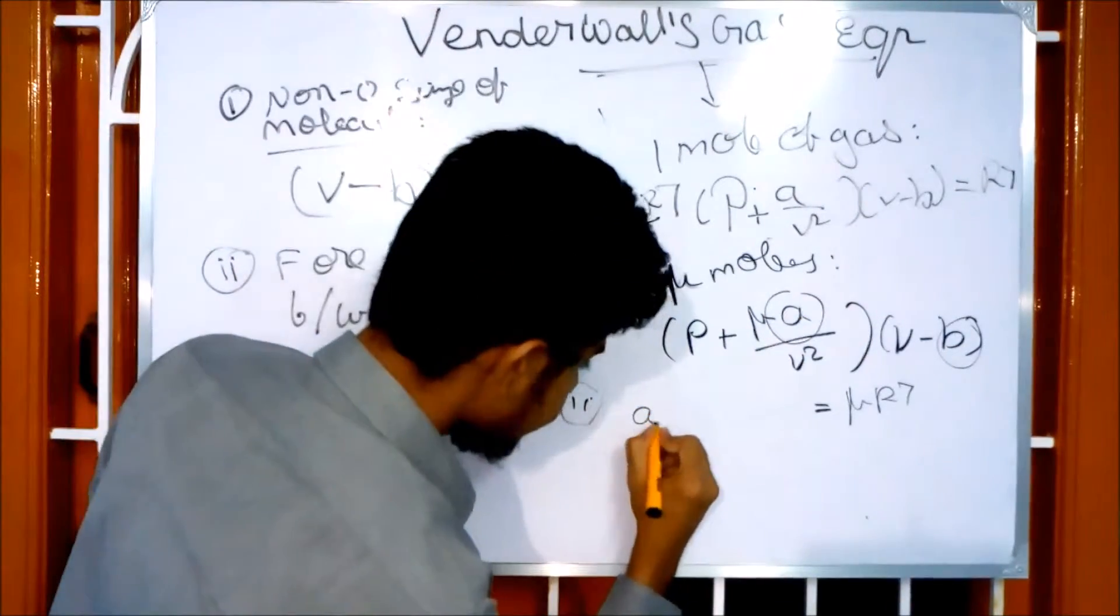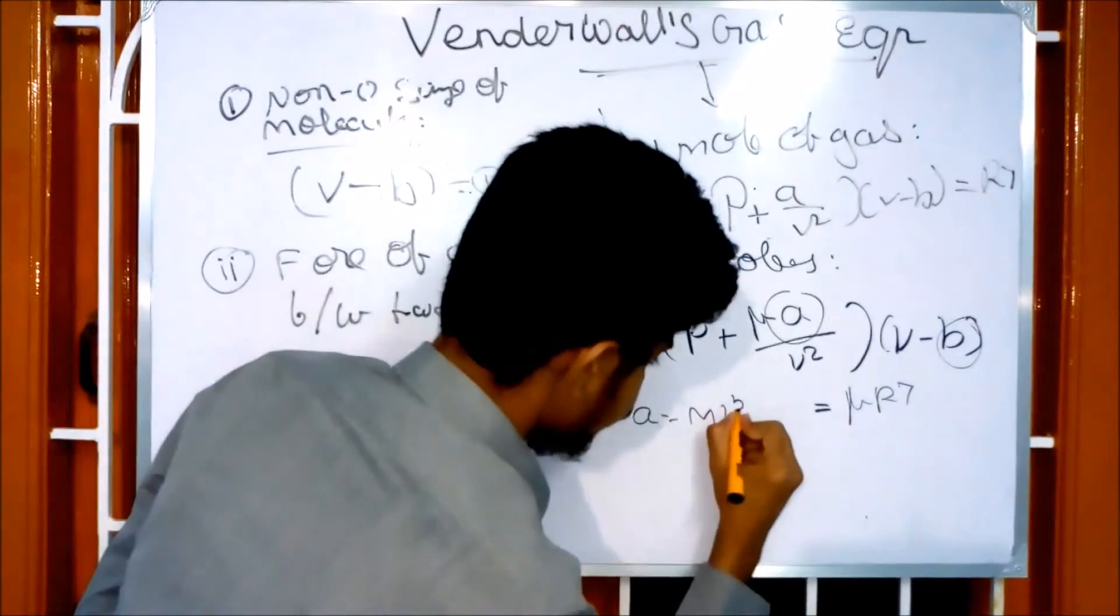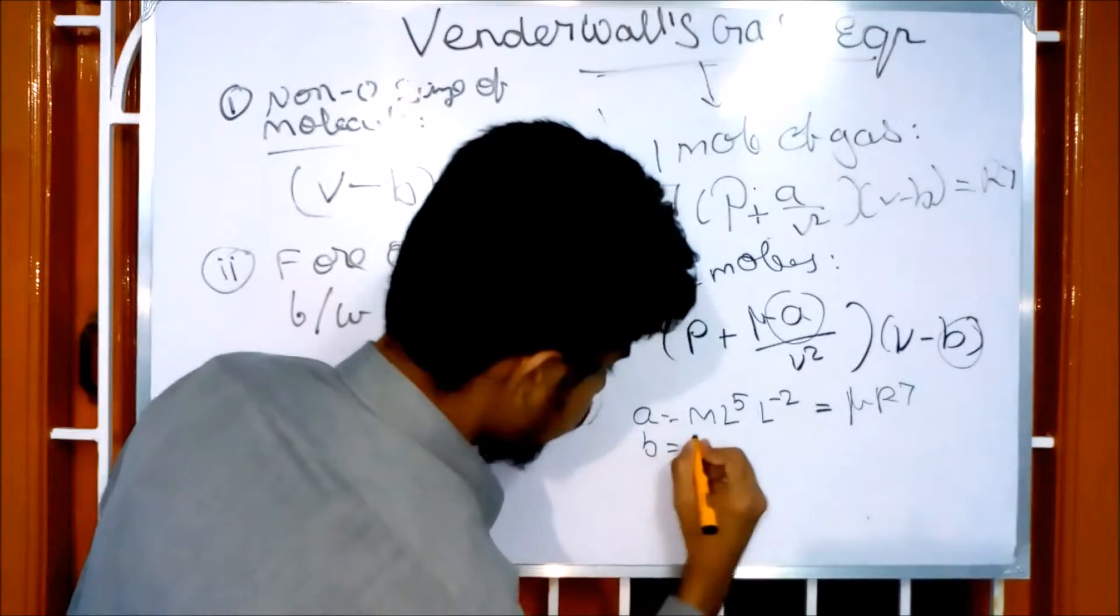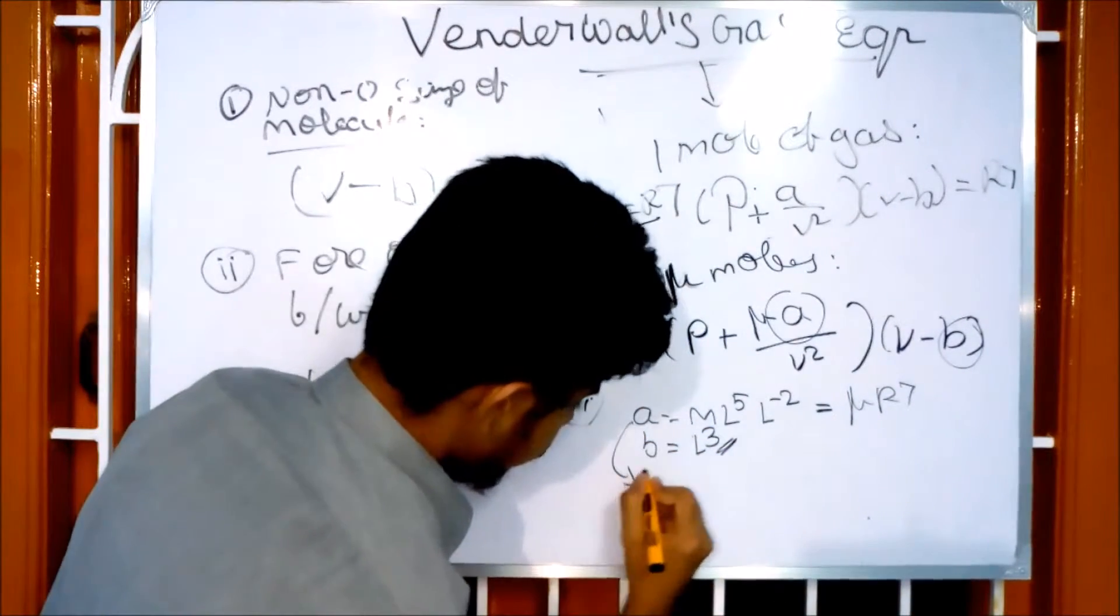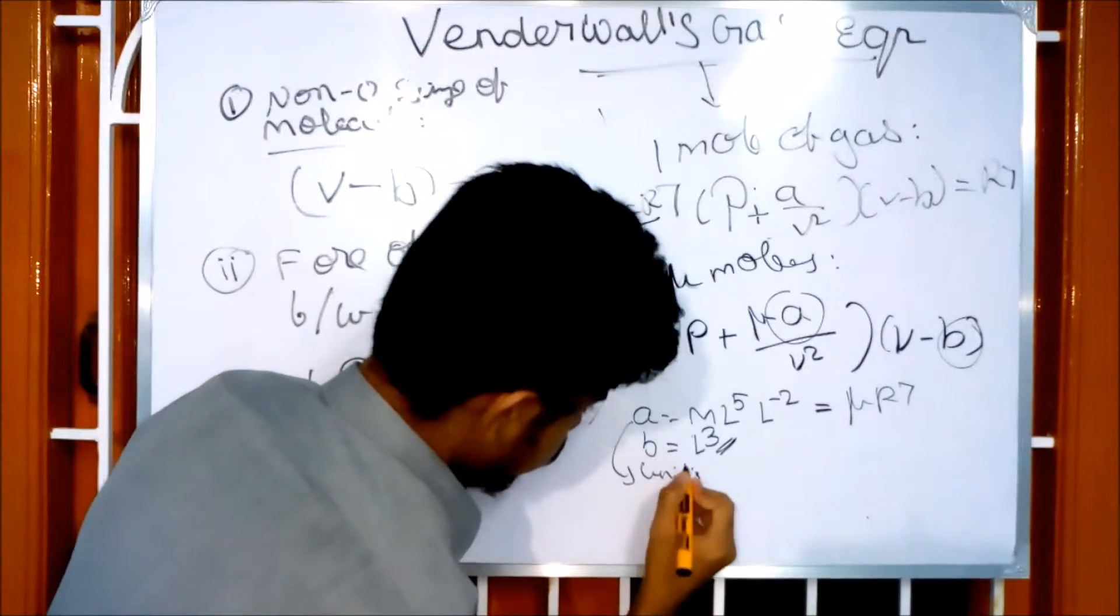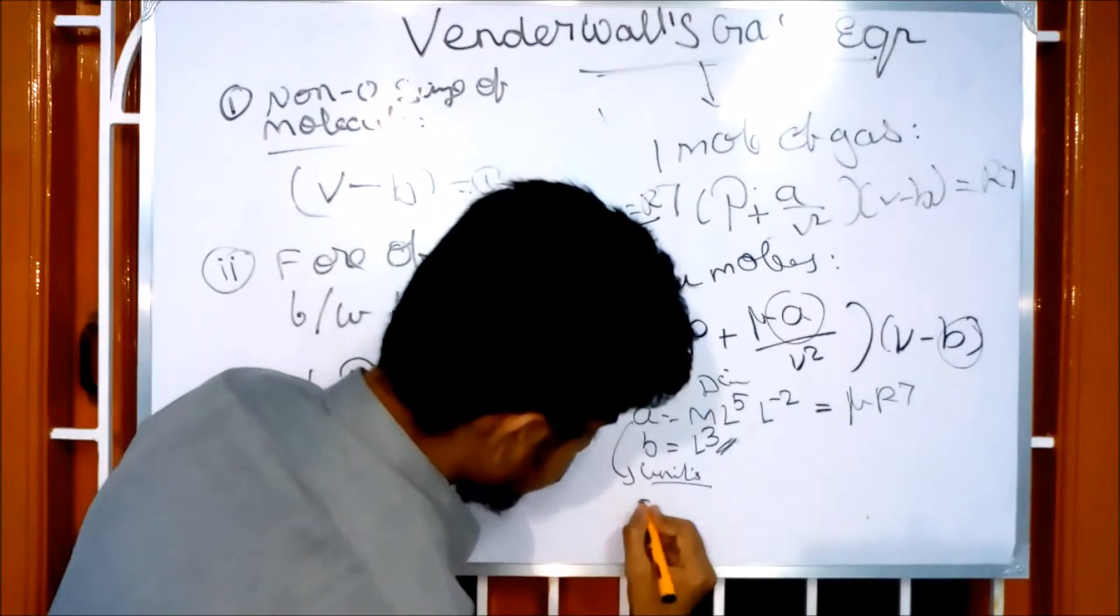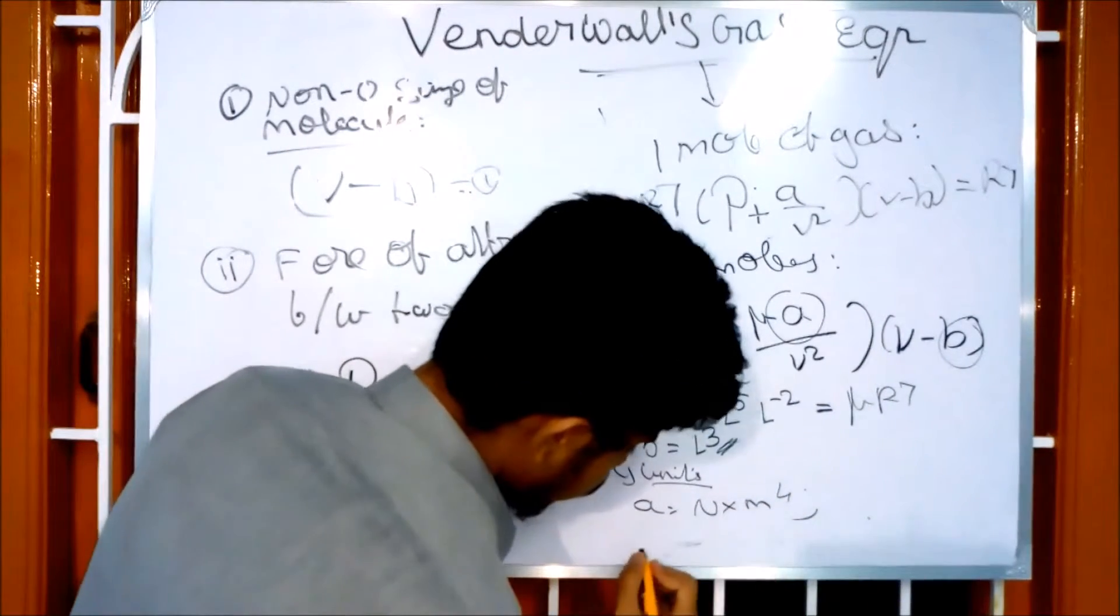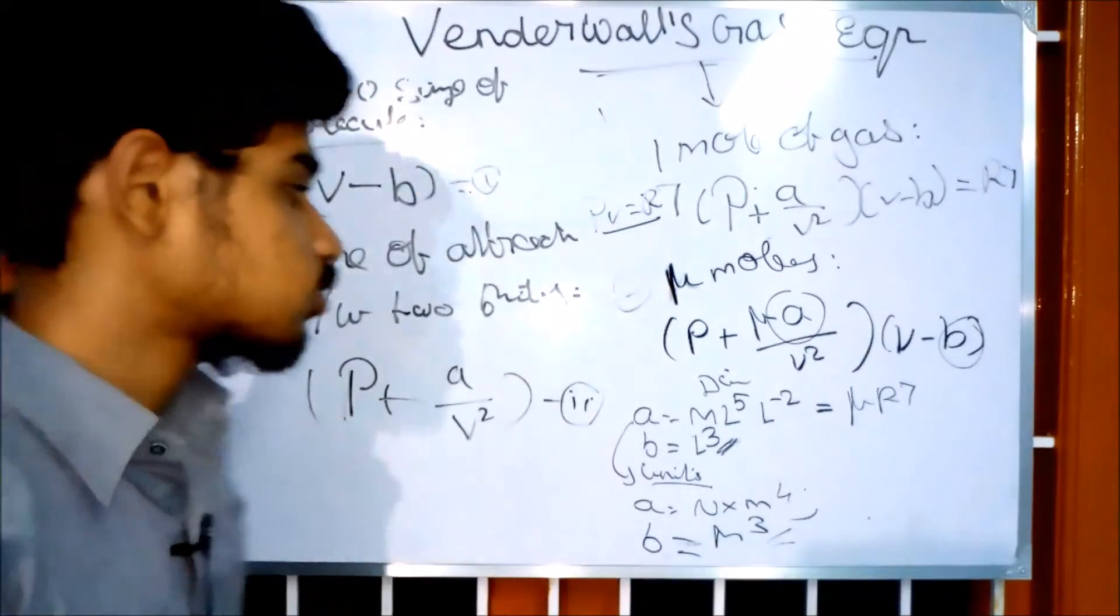The units and dimensions are: constant a has units of N·m⁴ (newton meter to the fourth power), and constant b has units of m³ (meter cubed). This is the dimensional analysis.